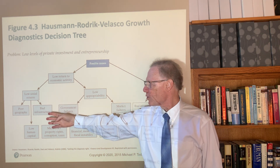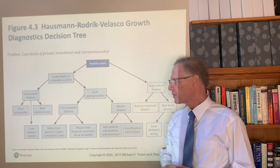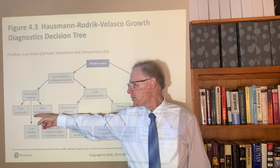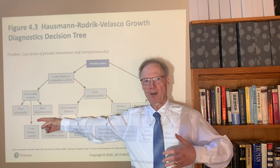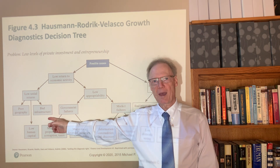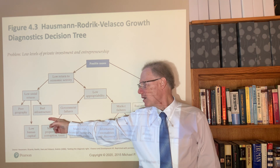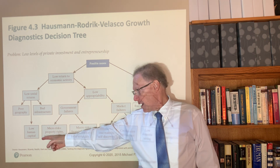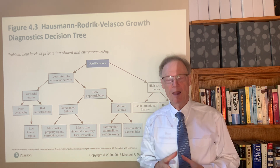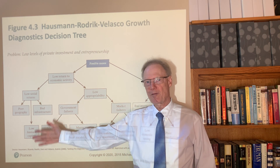With respect to low social returns, the authors have identified three general areas that are distinct and foundational. One is poor geography — failure to improve a malarial environment or find some way around constraints imposed by being in a mountainous area. Another possibility is bad infrastructure, whether it be roads that are highly congested or ports. The third area could be low human capital, which includes education and skills, as well as health. Any of these three might be the binding constraint holding back higher levels of investment.